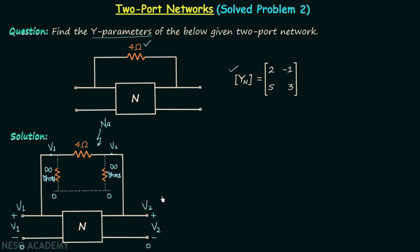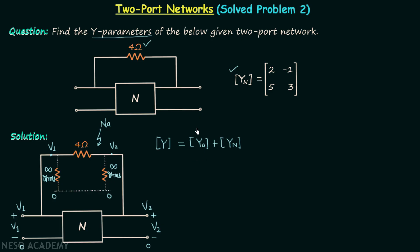The output port of network NA and the output port of network N also have the same voltage, and therefore they are connected in parallel. The Y parameters matrix of the overall network will be equal to the sum of the Y parameters matrix of the first network and the Y parameters matrix of the second network. We know the Y parameters matrix of network N, and we can easily find the Y parameters matrix of network NA using the shortcut.